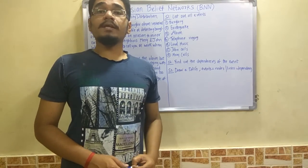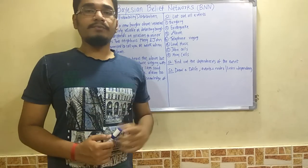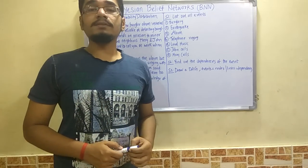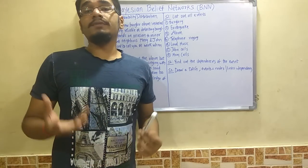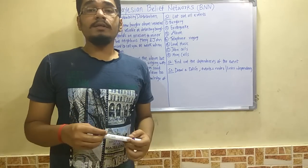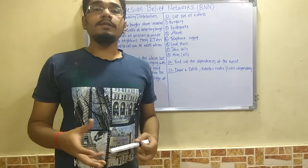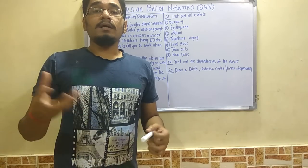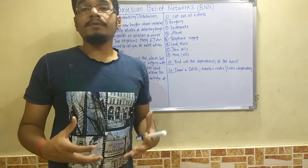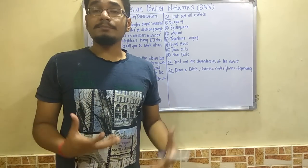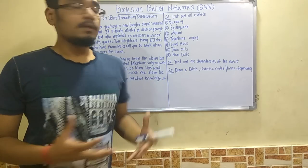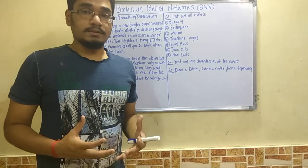This video features Bayesian Belief Networks (BBN) in Artificial Intelligence. BBNs are used to solve problems that involve knowledge under uncertainty. They are mainly applied in artificial agents to solve problems like criminal cases or domains where knowledge is unclear. We'll see how a Bayesian Belief Network is created and what assumptions are required, using an example of a burglary alarm system.